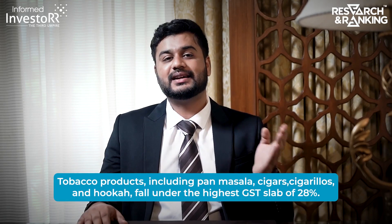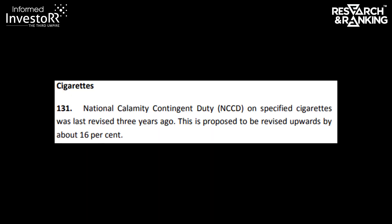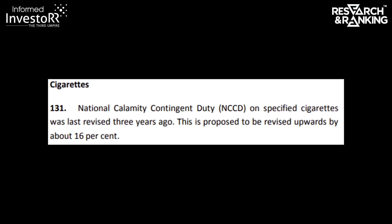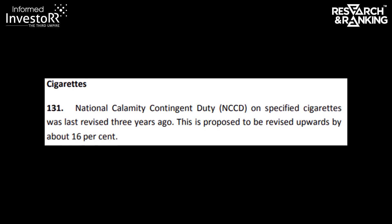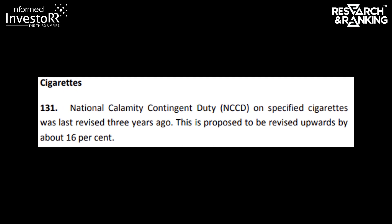Tobacco products including paan masala, cigars, cigarellos, and hookah fall under the highest GST slab of 28%. In addition, there is a compensation cess levied under GST law, as well as excise duty and NCCD. The NCCD was revised upwards by 16% in the FY23 budget. The total tax burden as a percentage of the final tax-inclusive retail price is about 52.7% for cigarettes, 22% for bidis, and 63.8% for smokeless tobacco. So next time you smoke a cigarette, more than half of the price is the sin tax you're paying.